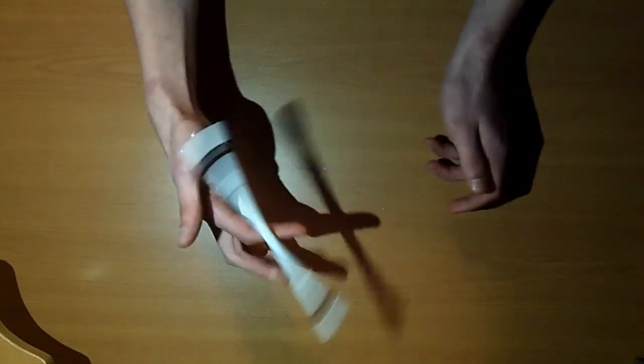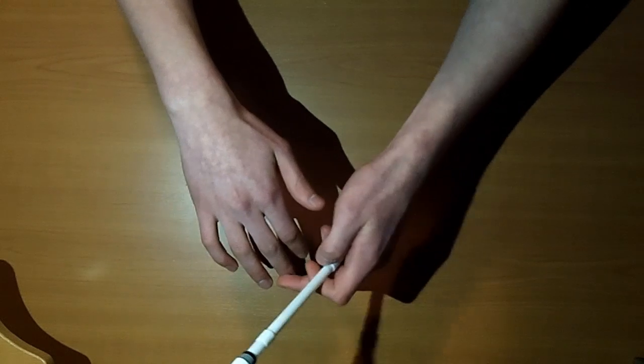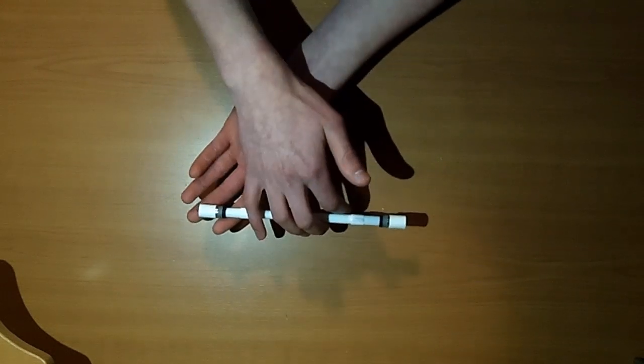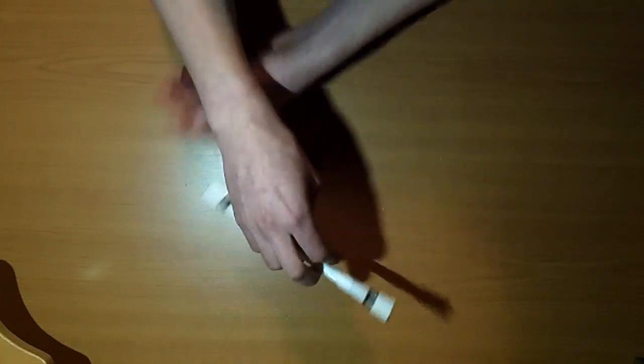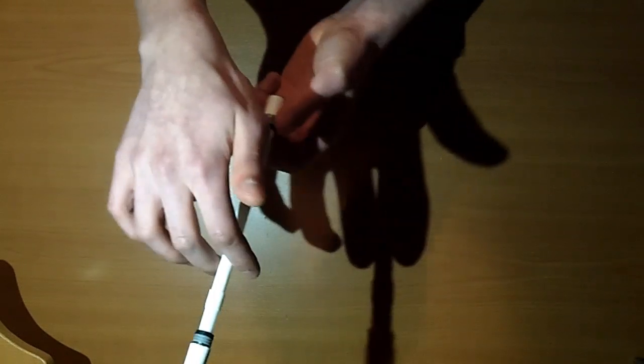You just initiate the spin like you would with a normal index around, by just moving this finger down and this finger up. But before you do that, start moving the pen upwards. And you want to do this kind of quickly, because if you don't, the pen won't have enough momentum and it'll just keep falling down.